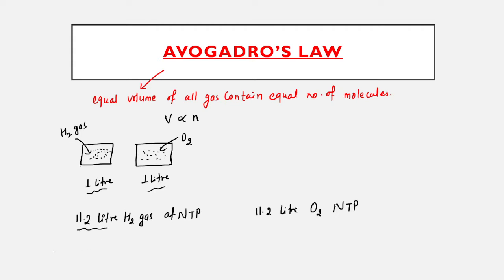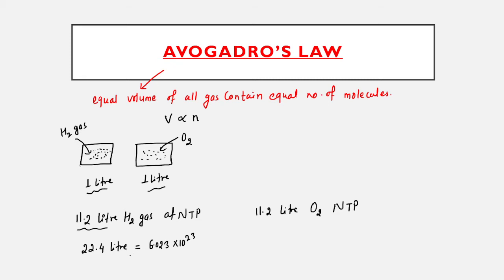According to the mole concept, 22.4 liters of any gas equals 1 mole of gas. So 22.4 liters of any gas contains 6.023 × 10²³ molecules — that is Avogadro's number. So at NTP, 22.4 liters of hydrogen gas contains 6.023 × 10²³ molecules.